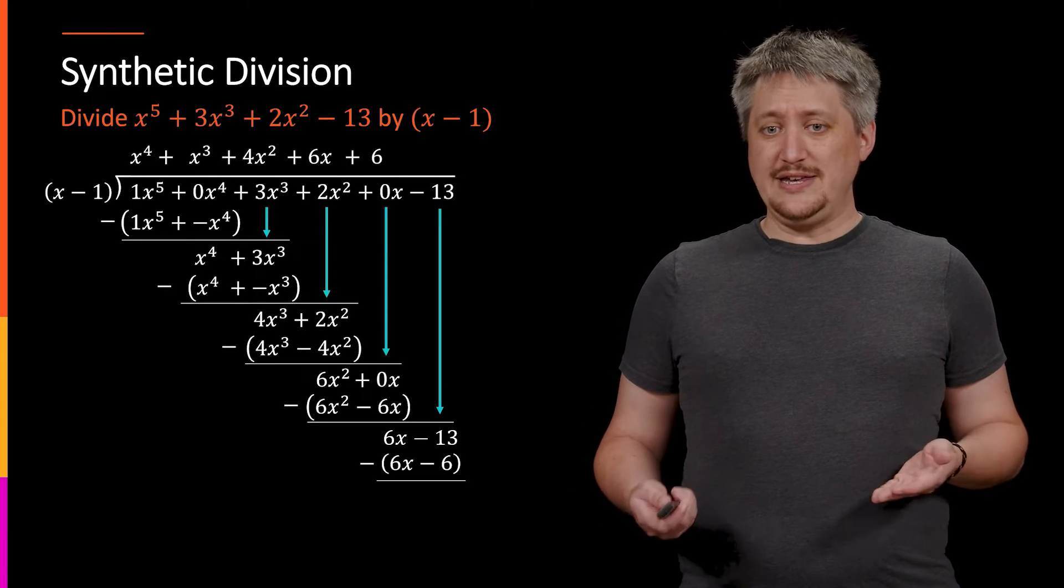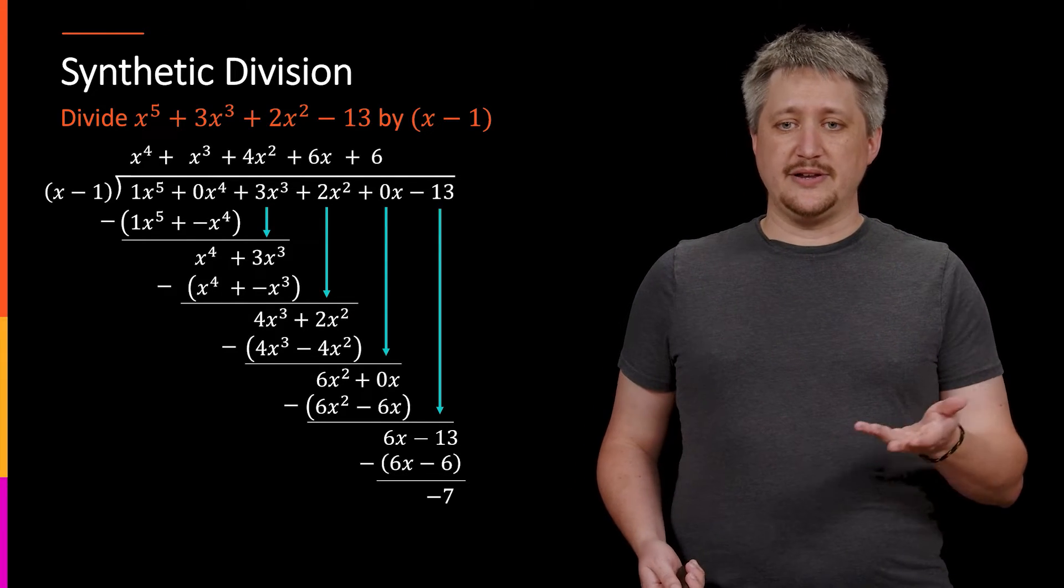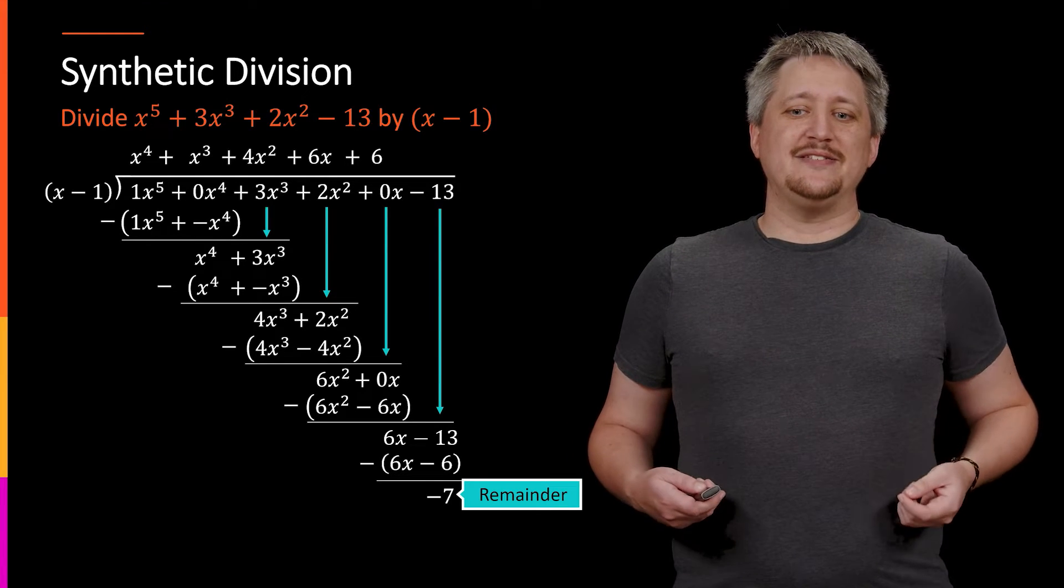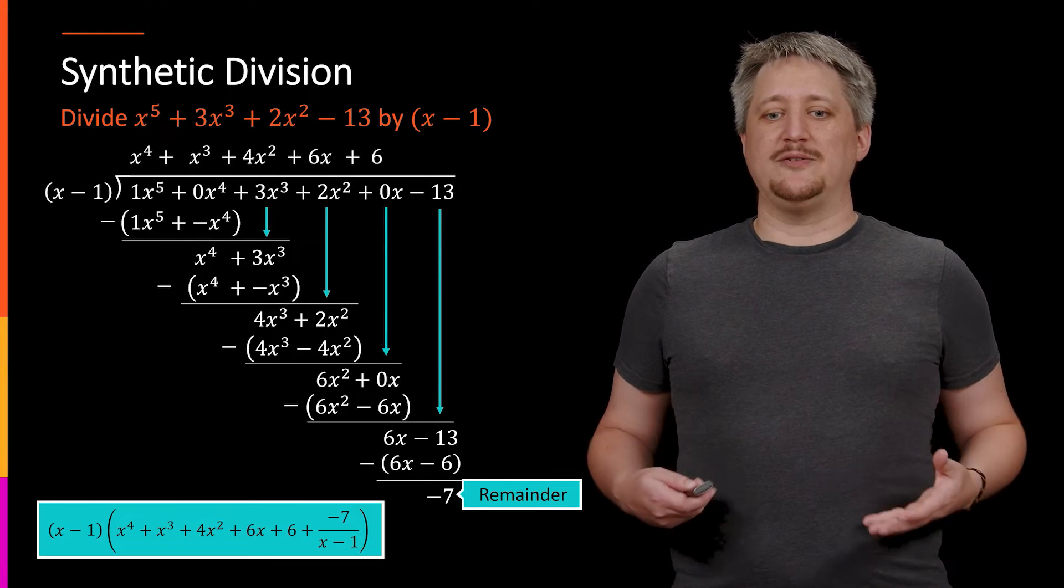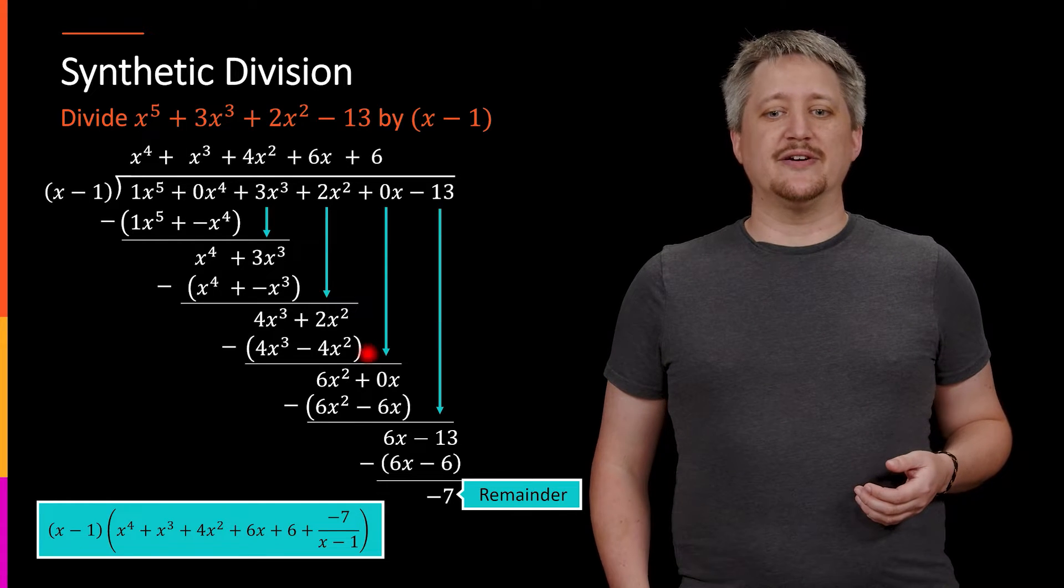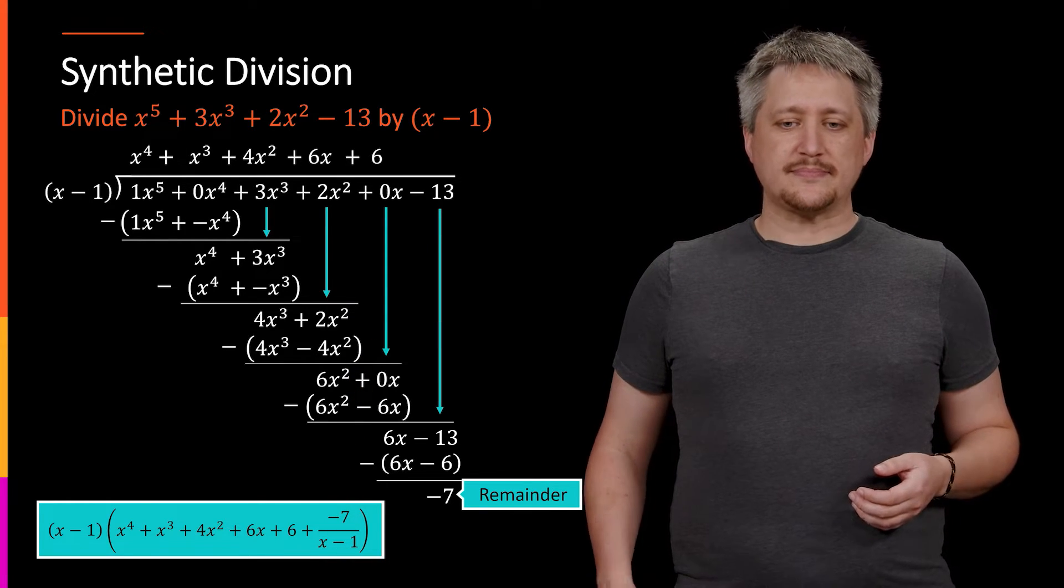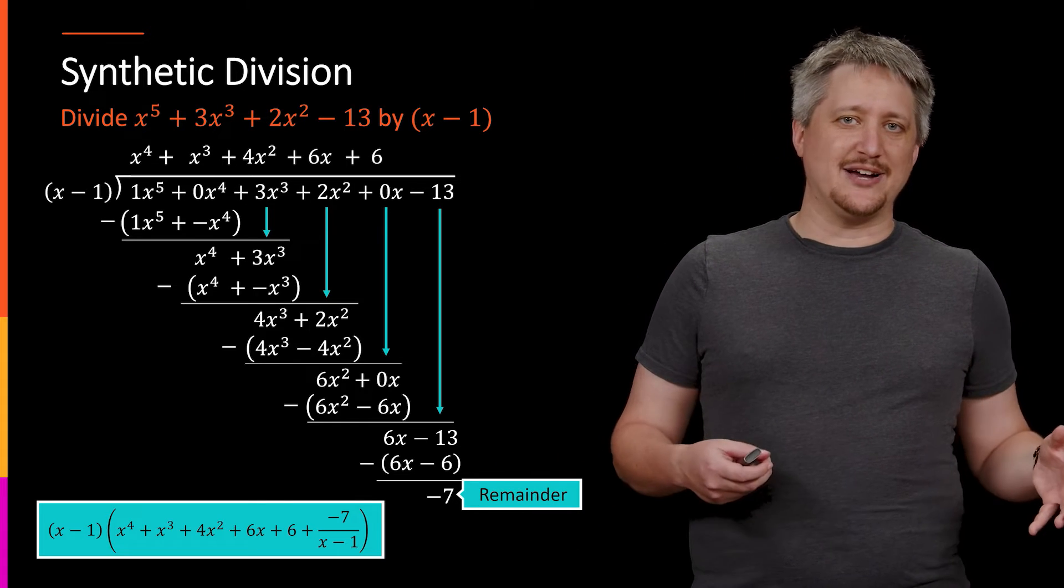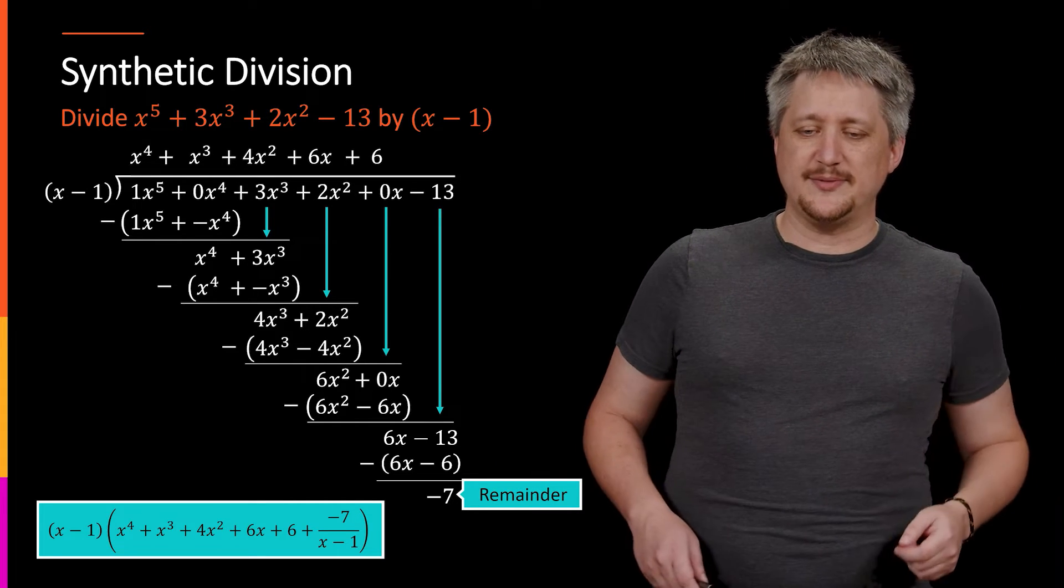Now, if it doesn't go in evenly, I'm going to get a remainder. Here we have this remainder here, but then that means that we take that remainder and we put it as the remainder bit on the end down here at the end of the thing divided by the actual divisor piece.